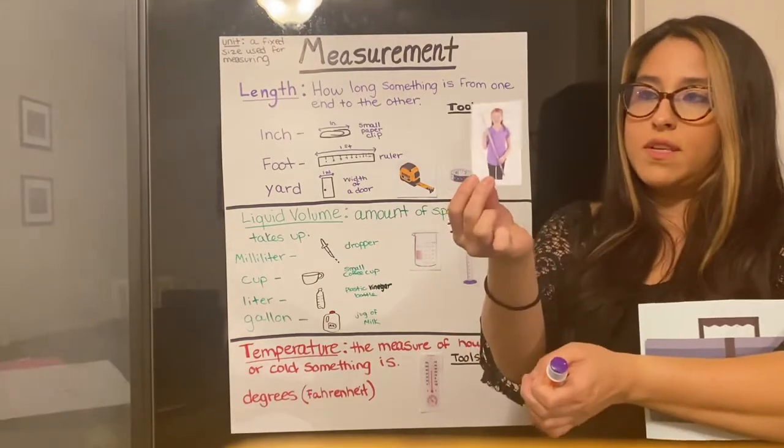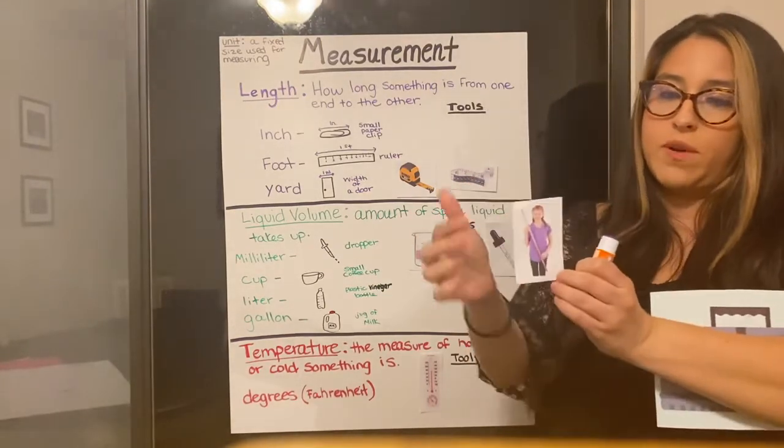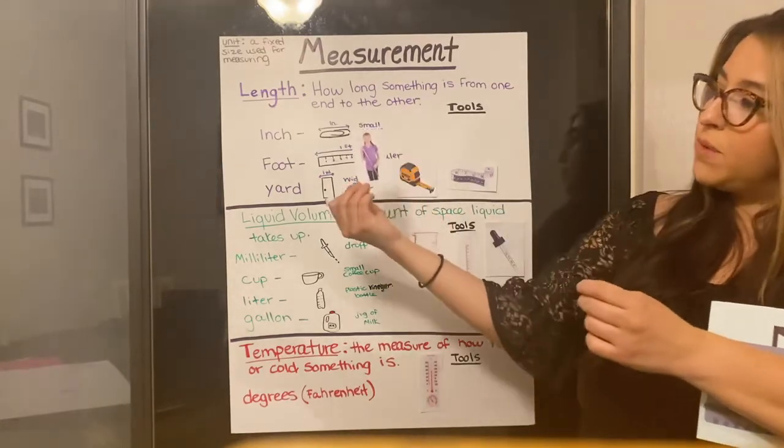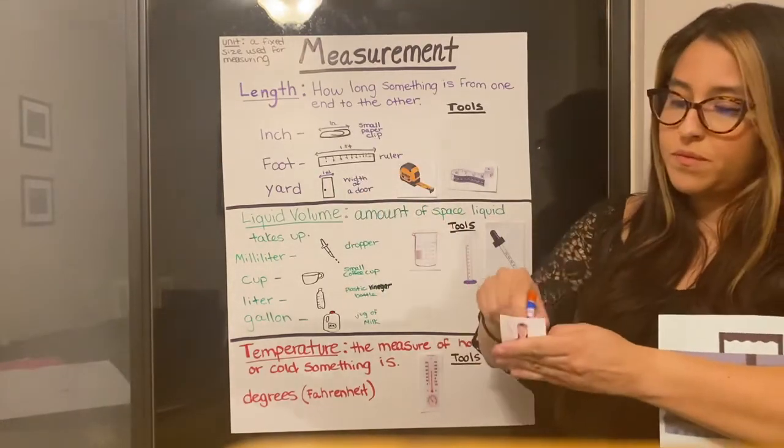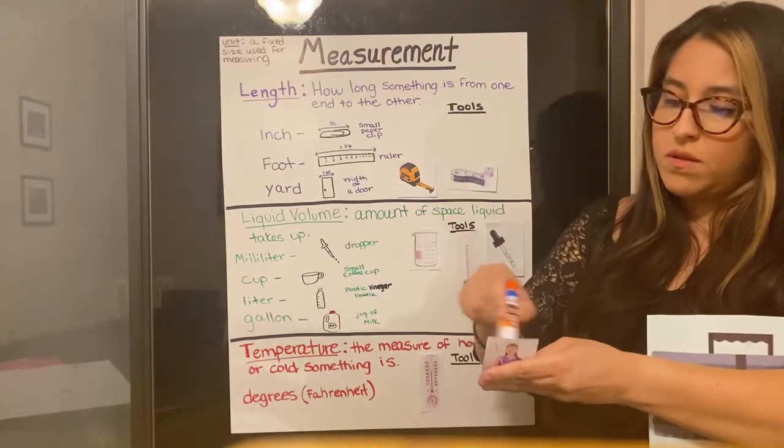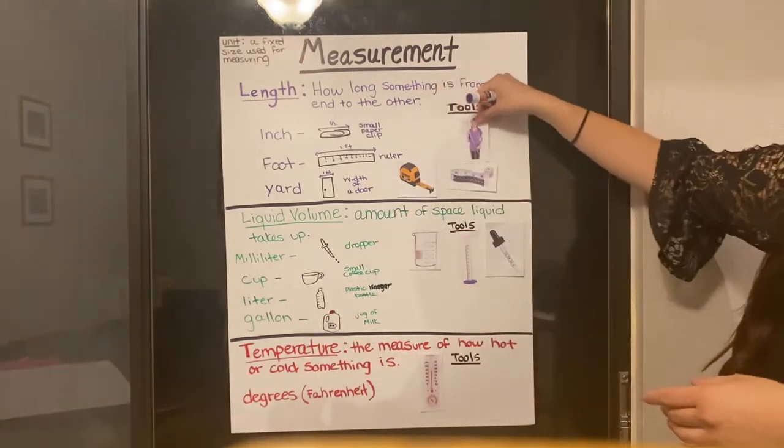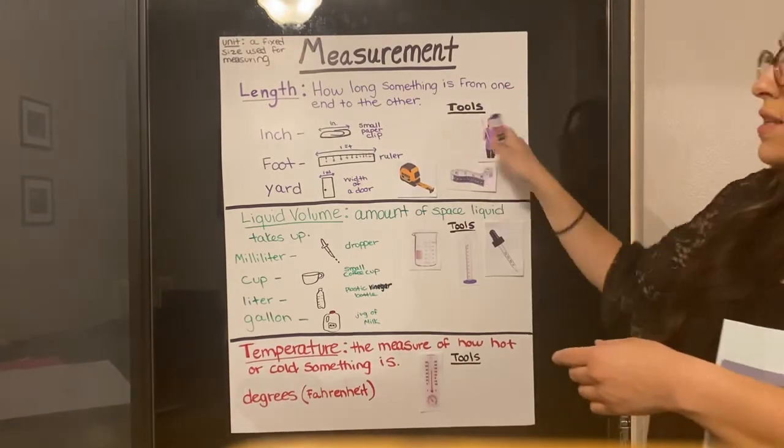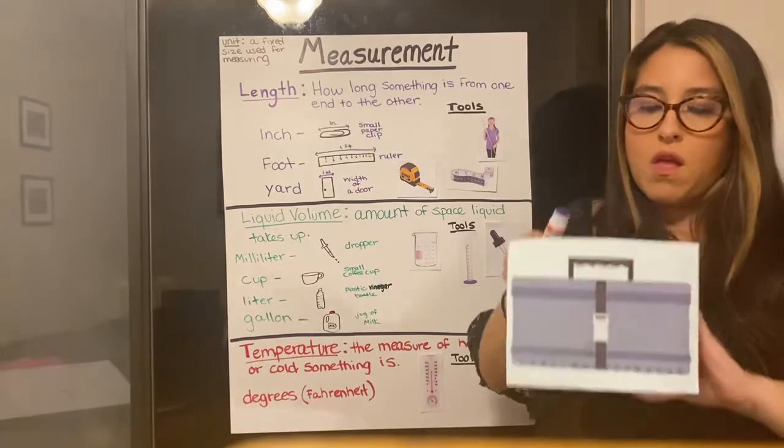This is a yardstick. I printed a picture of a yardstick next to a little girl, so you guys can see that it's bigger than a regular ruler. A yardstick would be, you can measure anything that's like one yard or less with a yardstick.